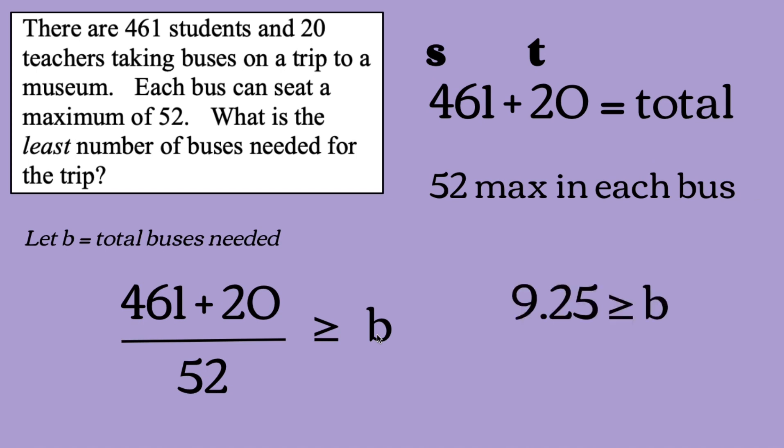Now, once we evaluate this, we get 9.25 as our answer. But because this is a problem asking for buses, we can't have one-fourth of a bus, obviously. So we're going to round this up to the next number. So the least number of buses that we're going to need is 10 buses. Because if we have more people, we can't have a decimal of a person. So if we have at least one more person, then we're going to have to seat them in a different bus.